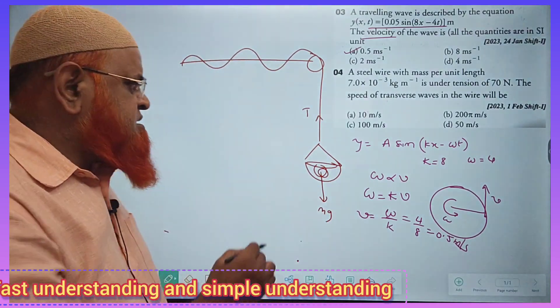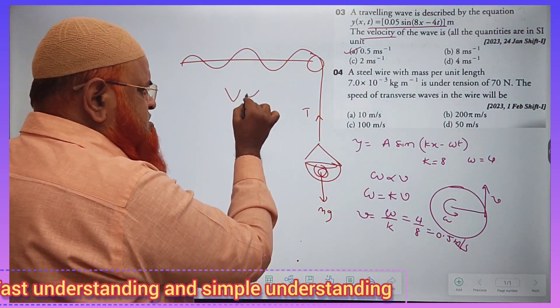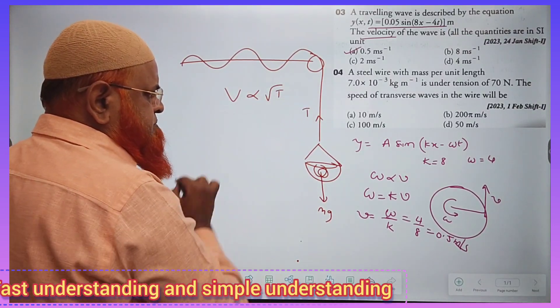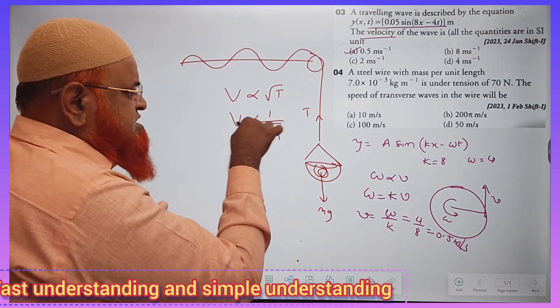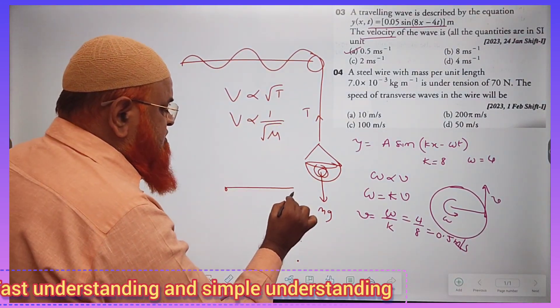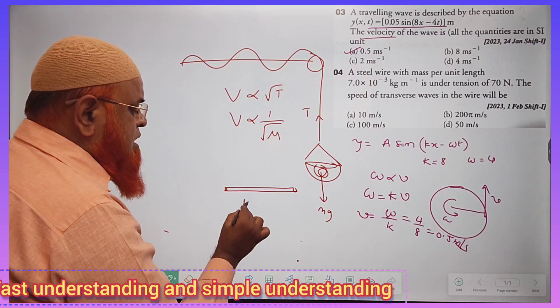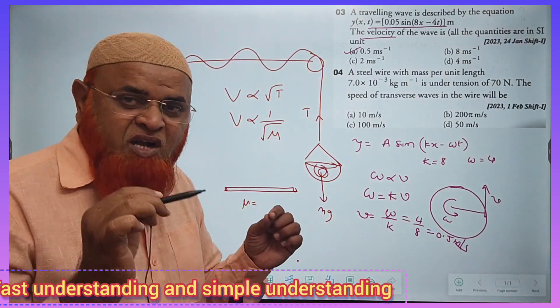You know what happens when the tension increases? You all know velocity is directly proportional to √T. And you also know velocity is inversely proportional to √μ. What is μ actually? If you take a wire, what is the meaning of μ? μ is nothing but linear density.